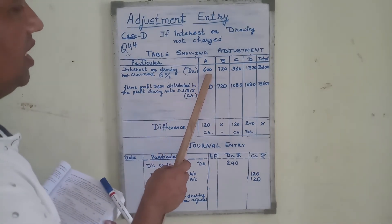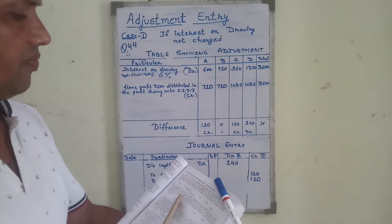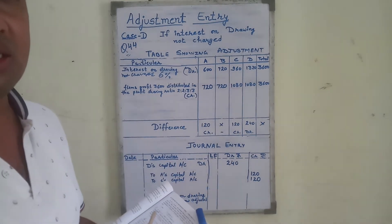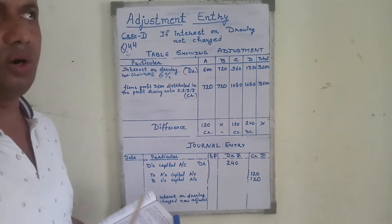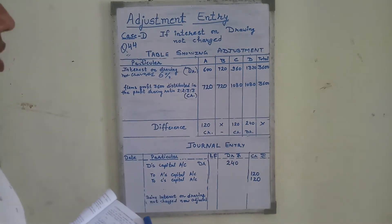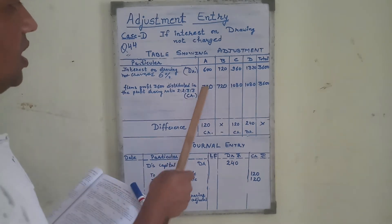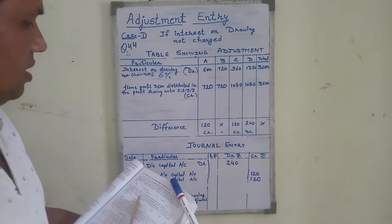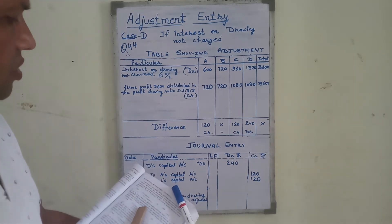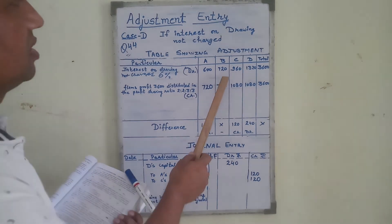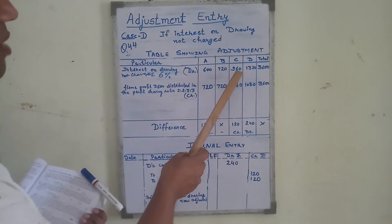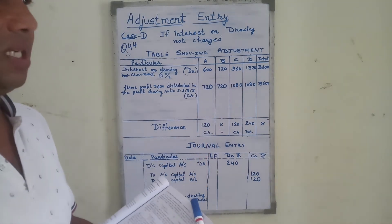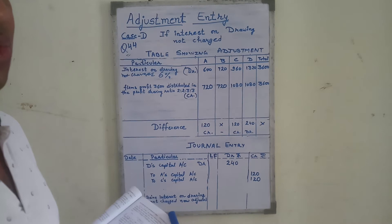Interest is charged for the average period of 6 months. 6% of 20,000 is 1,200, but since the date of withdrawal is not given, interest on drawings is charged for the average period of 6 months, so half the interest is charged: A gets 600. For B, drawings are 24,000 — 6% interest, half is 720. Similarly, C gets 960 and D gets 1,320.